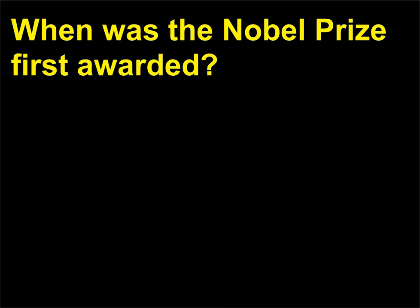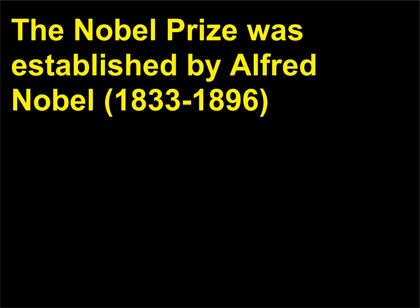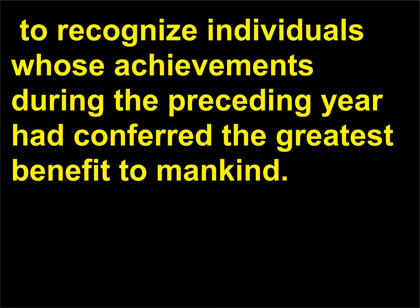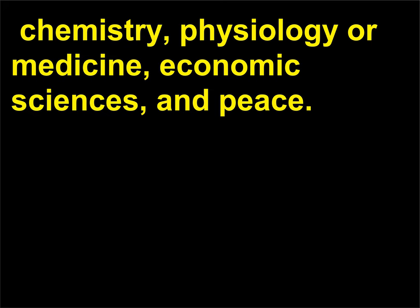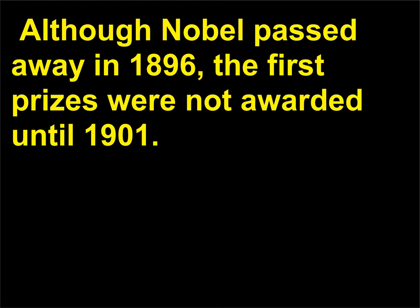When was the Nobel Prize first awarded? The Nobel Prize was established by Alfred Nobel, 1833–1896, to recognize individuals whose achievements during the preceding year had conferred the greatest benefit to mankind. Five prizes were to be conferred each year in the areas of Physics, Chemistry, Physiology or Medicine, Economic Sciences, and Peace. Although Nobel passed away in 1896, the first prizes were not awarded until 1901.